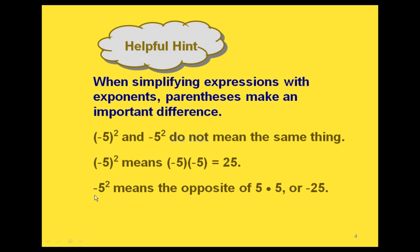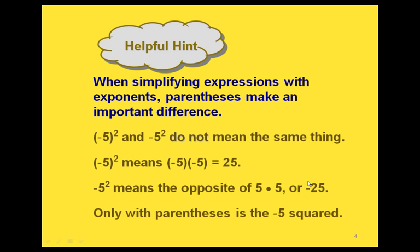But the expression without parentheses means it's the opposite of 5 squared — so it's the opposite of 5 times 5, and that gives us a negative 25. So if we have the parentheses, we're squaring the negative 5. If we don't have the parentheses there, then we're squaring the 5 and then taking the opposite of our result.